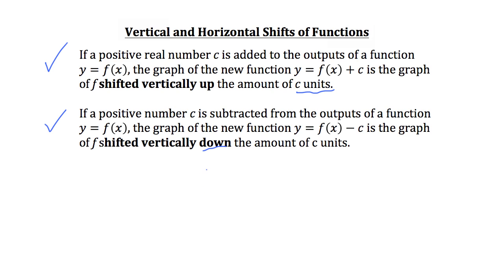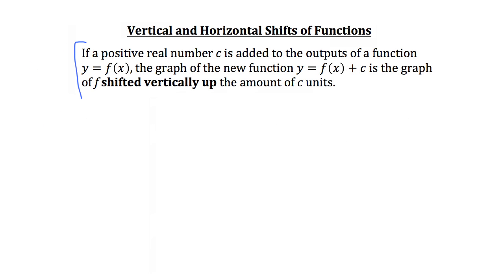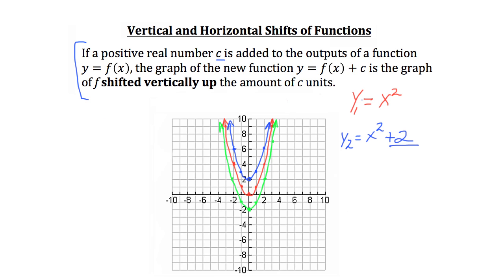Let's look at both of those more specifically. When we add the real number c to our function y equals f of x, the graph is shifted up vertically by c units. Assuming y1 equals x squared and y2 equals x squared plus 2, our original function y equals x squared is shown in red. Adding 2 gives us y2 equals x squared plus 2, shown as the blue graph — the exact same shape, just shifted up the y-axis by 2 units, since c equals 2.